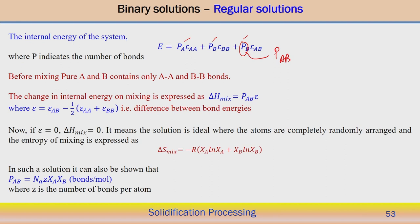Before mixing, pure A and pure B contain only AA and BB bonds respectively. After mixing, the change in internal energy on mixing is simply expressed by the enthalpy of mixing, ΔH_mix, which equals P_AB times the effective bond energy epsilon (ε).